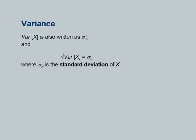The variance has another notation: it is also denoted by σ²_X, with a capital X subscript to denote it is the variance of random variable X. The square root of this variance is σ_X, the standard deviation of the random variable X. Although the symbol σ² might suggest it is the square of σ, we should think of σ² as a standalone symbol for variance, not necessarily as the square of σ — even though they are the same quantity.